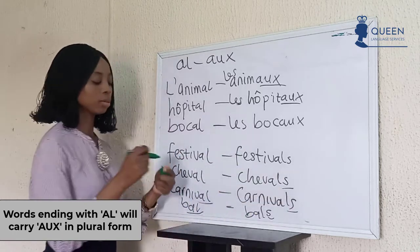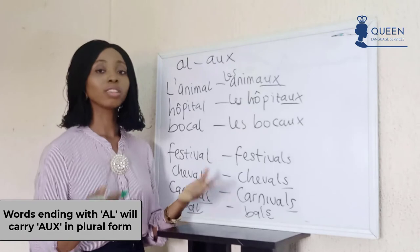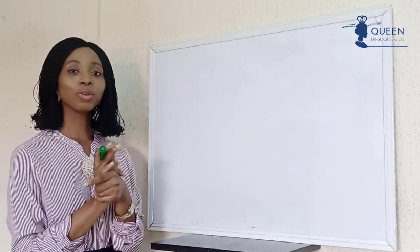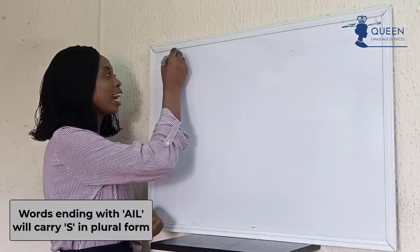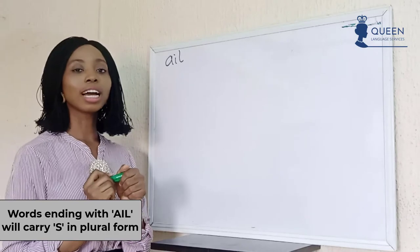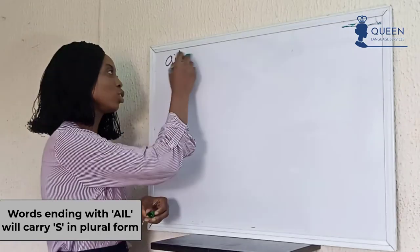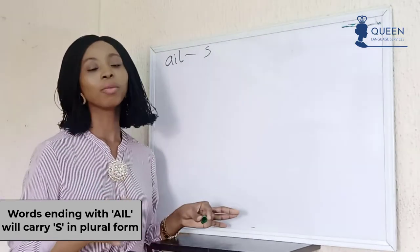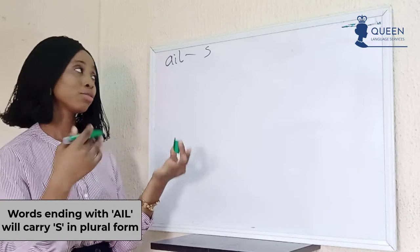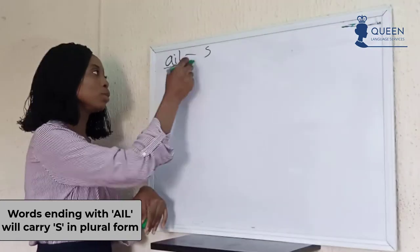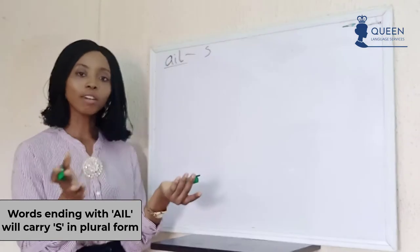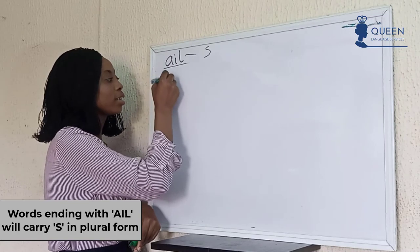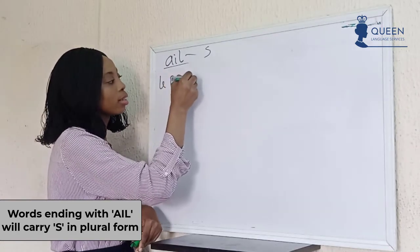These are some of the exceptions to the -al rule. Let's look at another example. The last group for today's video: words having -ail in the singular form. In the plural form we have it as -aux. Let's look at words with -ail in the singular, such as 'le portail,' 'le détail.'